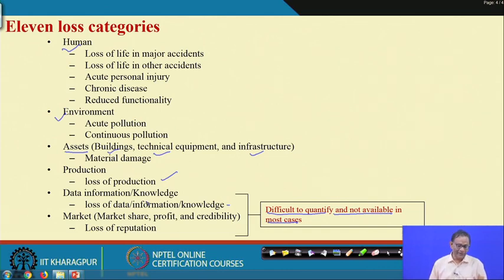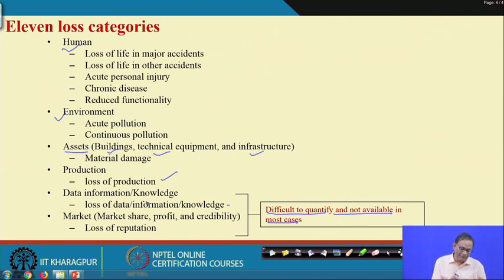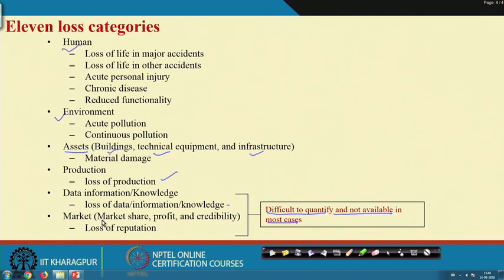My suggestion is: when you do a case study on loss calculation and try to find out the budget for safety, if you do not consider all loss categories, you may find the cost of accident is much less than it actually is. It is recommended that you consider all 11 categories of losses, find ways to calculate each category, aggregate or sum them up, and use the resultant loss for safety budgeting or cost-benefit analysis.